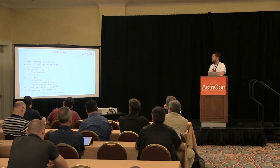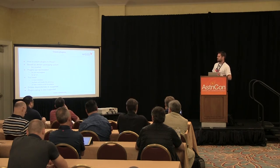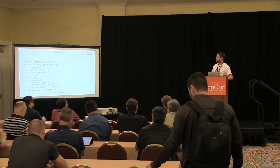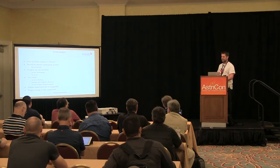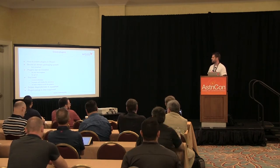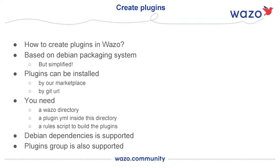How to create a plugin in WAZO: we decided to base our plugin system on Debian packaging, since it's a Debian-based distribution. But Debian packaging is not really simple, so we decided to simplify this system. A plugin can be installed from our marketplace or directly by a Git URL. So it's easy to install a new plugin — not necessarily on a marketplace — but if you have a GitHub repository, you can develop your plugin and give the URL to WAZO users and they install it easily.